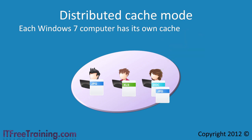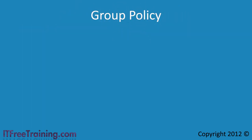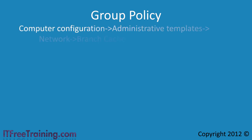In order to start using Branch Cache, it needs to be set up. This can be done through Group Policy or using NetSH. If you use Group Policy, the settings are found in Computer Configuration, Administrative Templates, Network, and then Branch Cache.